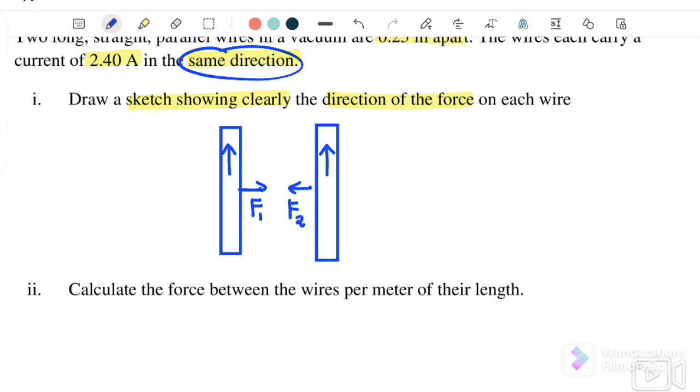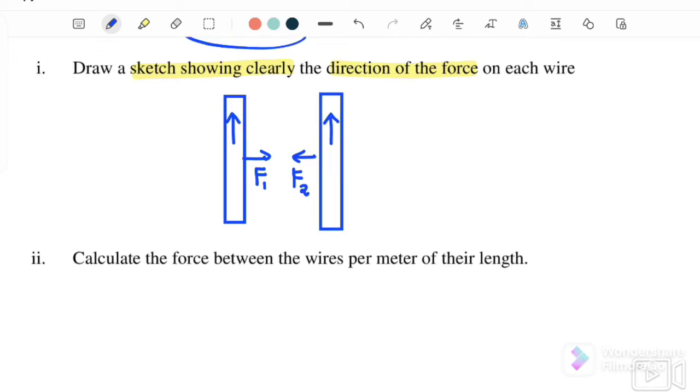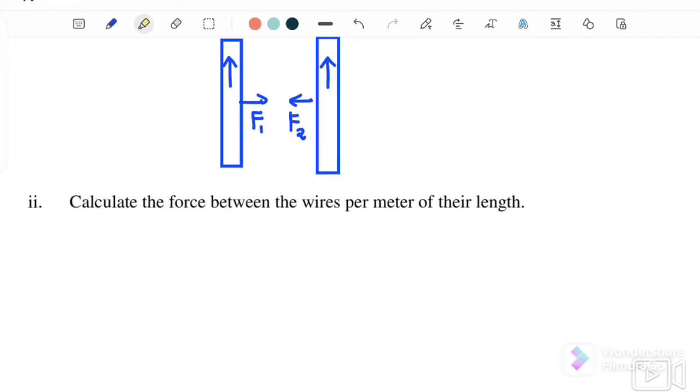Next, calculate the force between the wires per meter of their length. We want to find force over l, where the equation is equal to mu naught i1 i2 over 2 pi d.